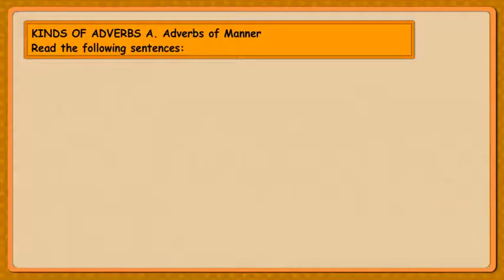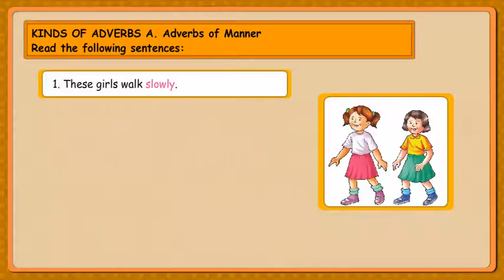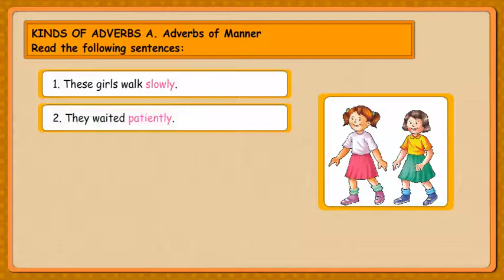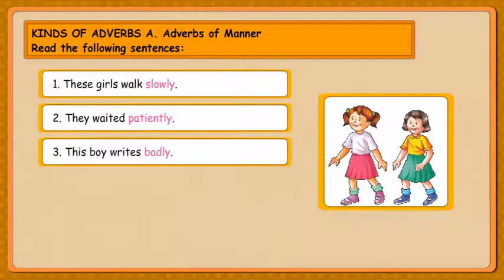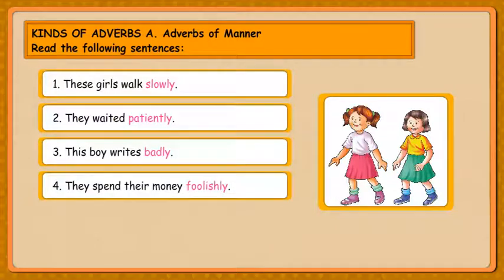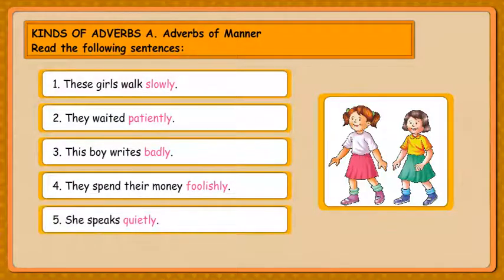Kinds of Adverbs: A. Adverbs of Manner. Read the following sentences. These girls walk slowly. They waited patiently. This boy writes badly. They spend their money foolishly. She speaks quietly.